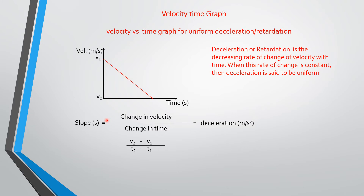The slope of a velocity-time graph gives you acceleration or deceleration as the case may be. For deceleration, V2 minus V1 gives a negative value because V2 is lower than V1, giving you a negative acceleration, which equals retardation or deceleration.